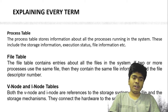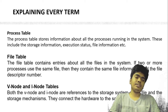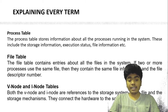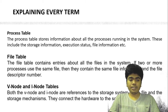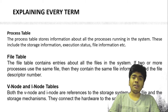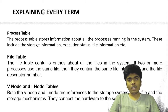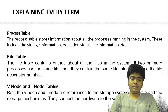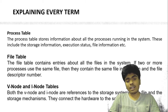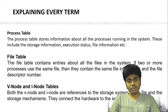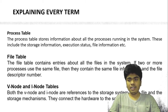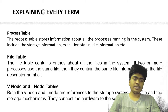The file table contains entries about all the files in the system. If two or more processes use the same file, they share the same file information and the same descriptor number. If you save two identical files in the same memory, they are given the same address — it will not store different addresses for two identical files stored in different places.